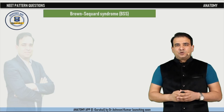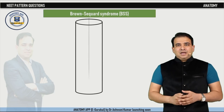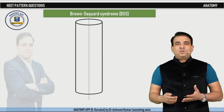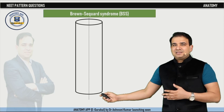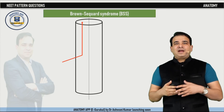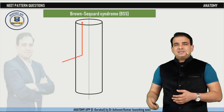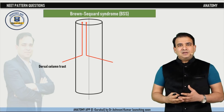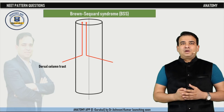In Brown-Séquard syndrome, let's understand the sensory deficits. Consider a cross-section of the spinal cord with the midline marked. The spinothalamic tracts decussate within the spinal cord and then ascend upward, whereas the dorsal column tracts decussate in the medulla oblongata — so in the spinal cord, dorsal column fibers run on the ipsilateral side. The dorsal column tract ascends and relays in the nucleus gracilis and cuneatus in the medulla, while the spinothalamic tract decussates at the spinal cord level — taking two to three segments — then ascends to the brainstem and relays into the thalamus.